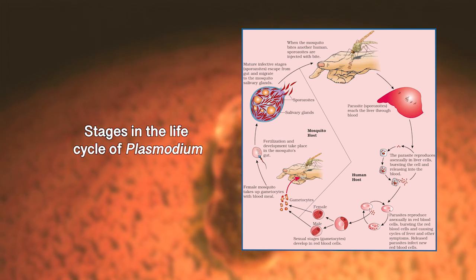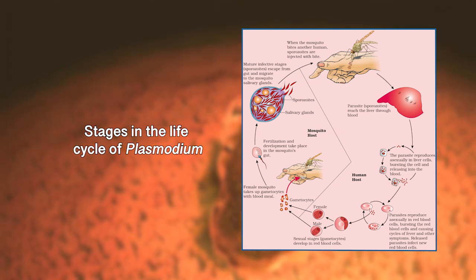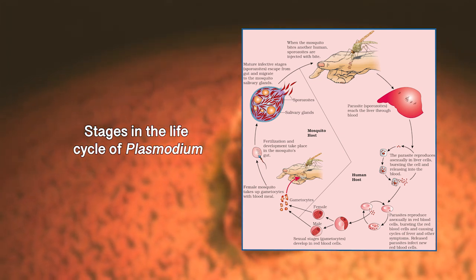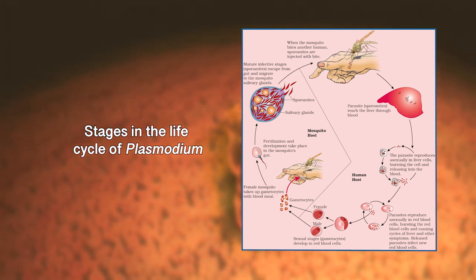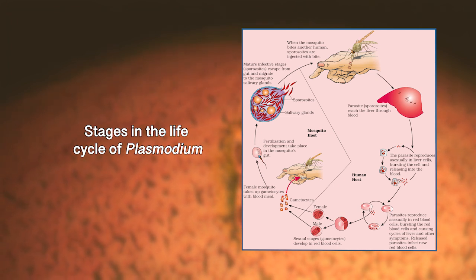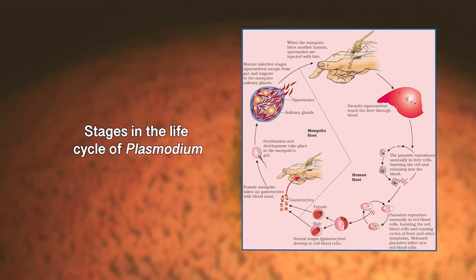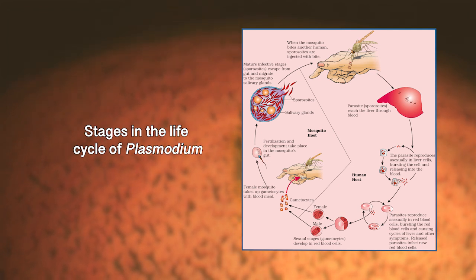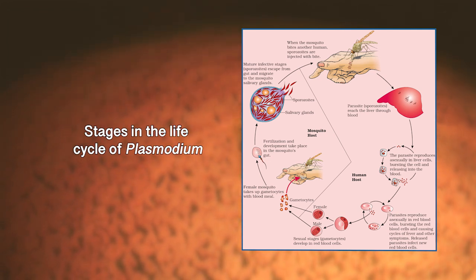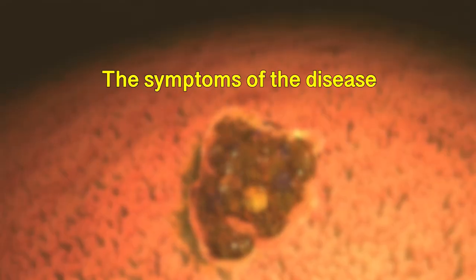Human beings get affected when an infected female Anopheles mosquito bites a healthy person. The mosquito injects the infective stage sporozoites into peripheral blood vessels; these then enter the liver cells and then erythrocytes, where the parasite undergoes several rounds of multiplication. The human gets malaria when infective RBCs break down and release toxic granules.